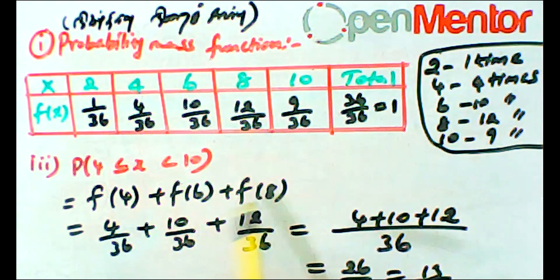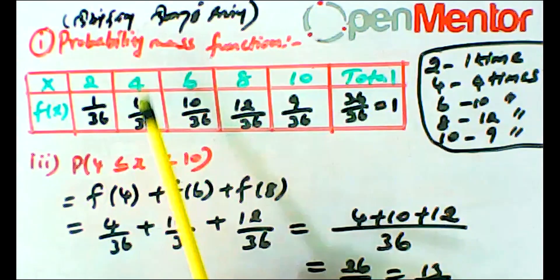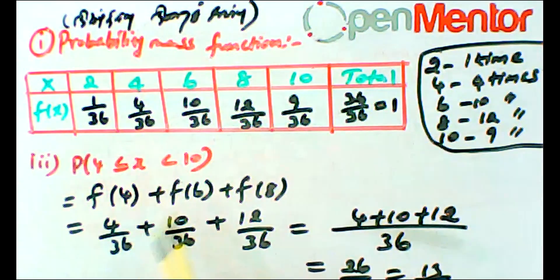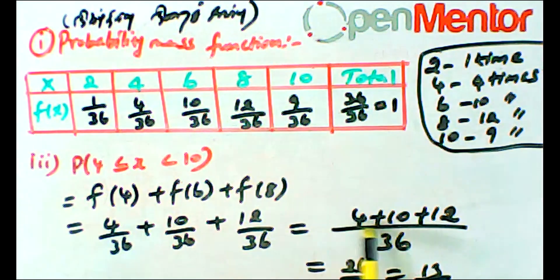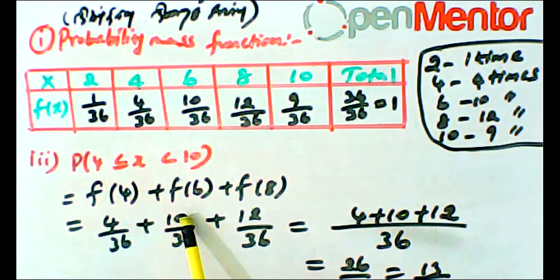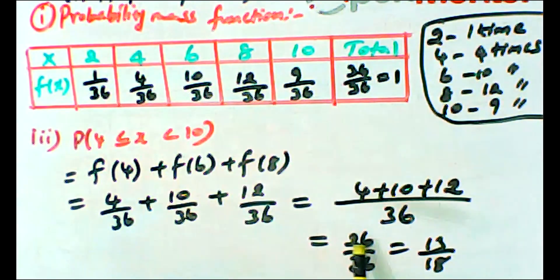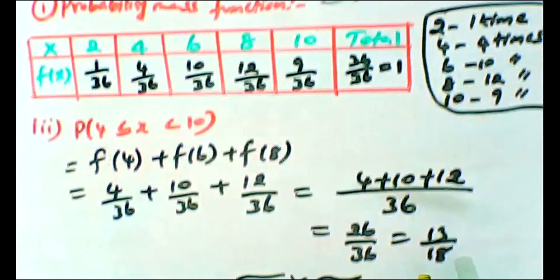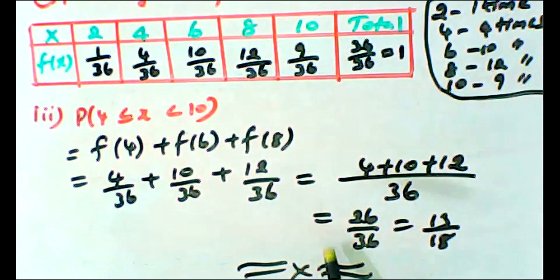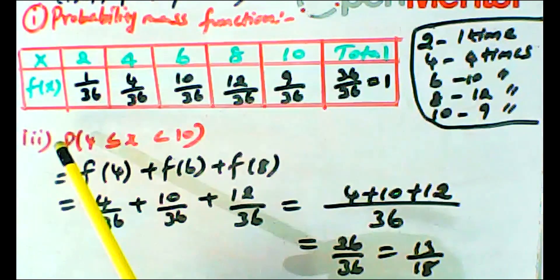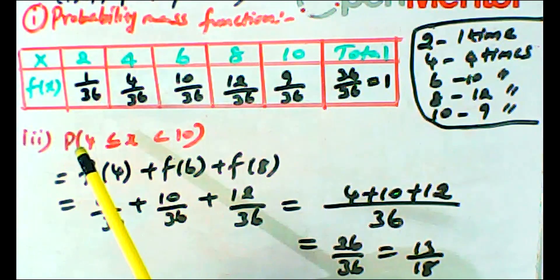P(4 ≤ x < 10) equals f(4) plus f(6) plus f(8), which gives us an answer of 13 divided by 18. The total answer works out to 13/18. I will see you in the next video.